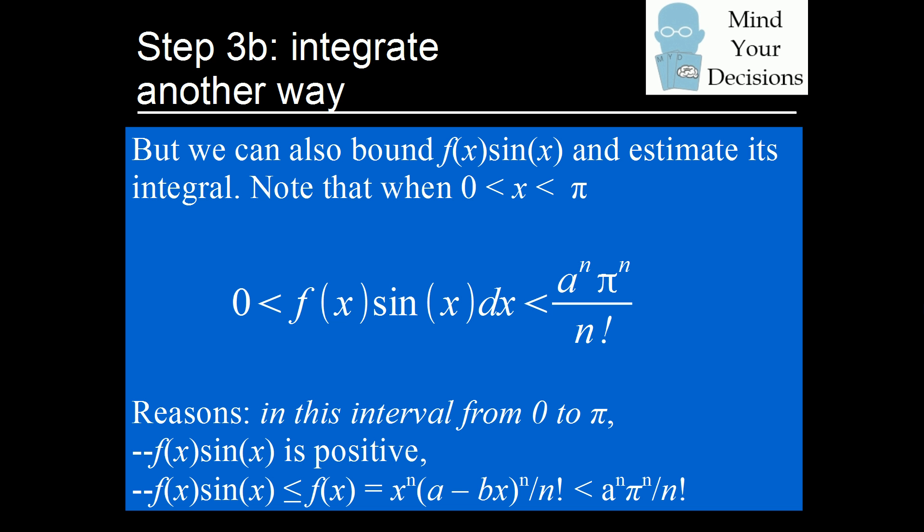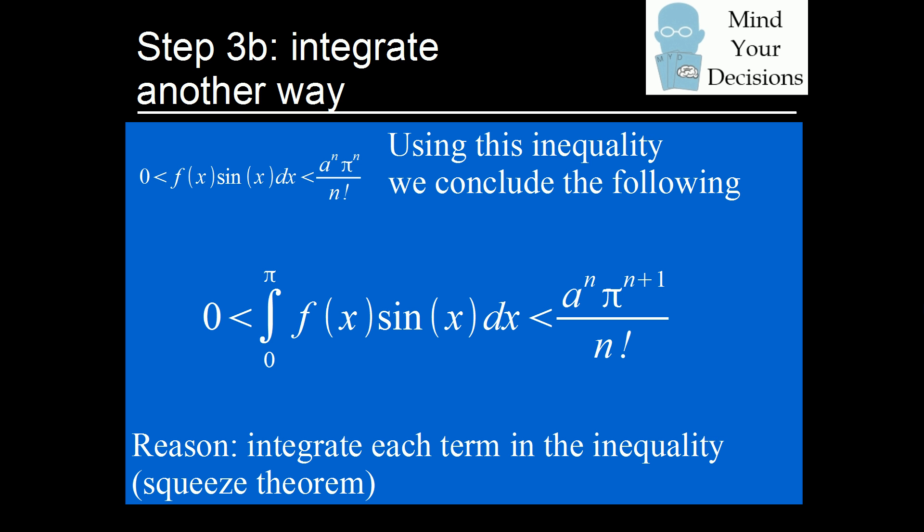Now we can integrate all three parts of that inequality. Integrating zero from zero to pi gives zero. Integrating f of x sin x gives the integral from zero to pi. Integrating the constant a to the n pi to the n over n factorial over the interval of length pi gives a to the n pi to the n plus one over n factorial. So the integral of f of x sin x is bounded: it's positive but less than a to the n times pi to the n plus one, over n factorial.